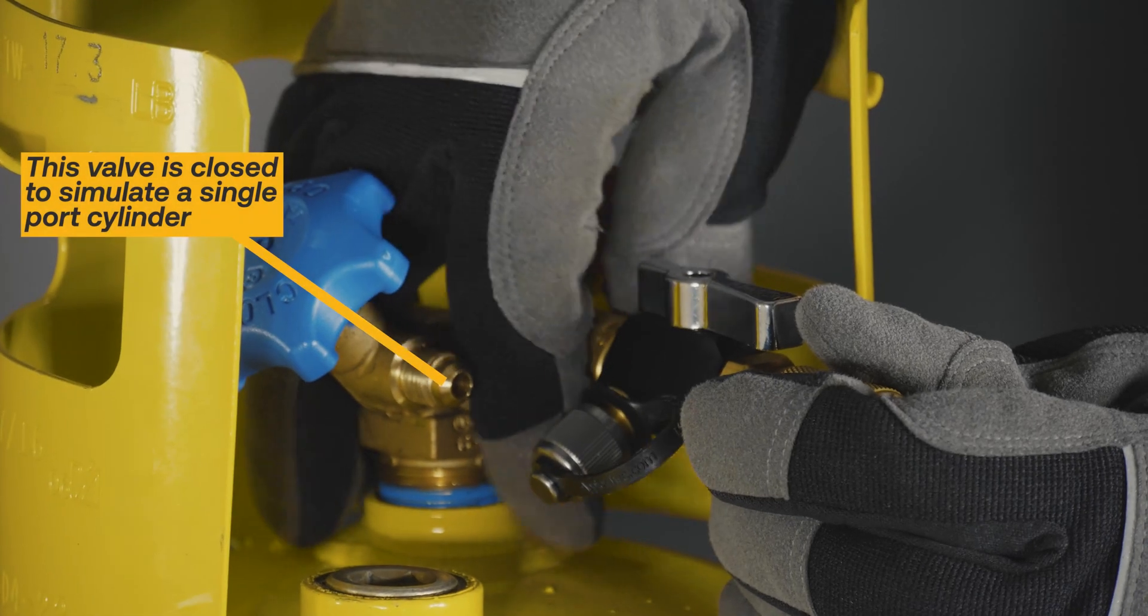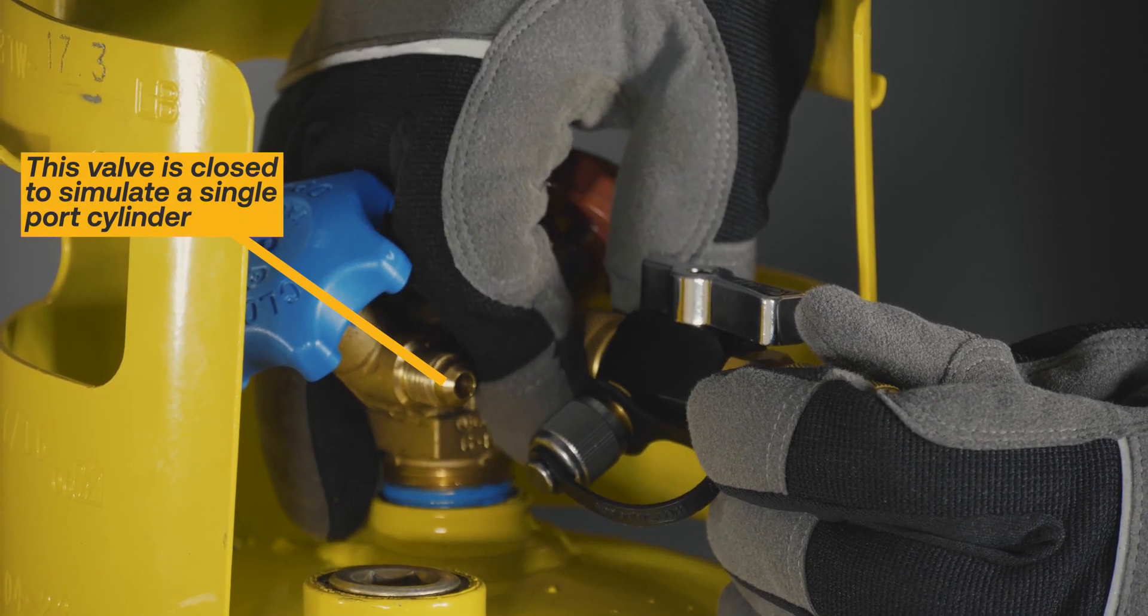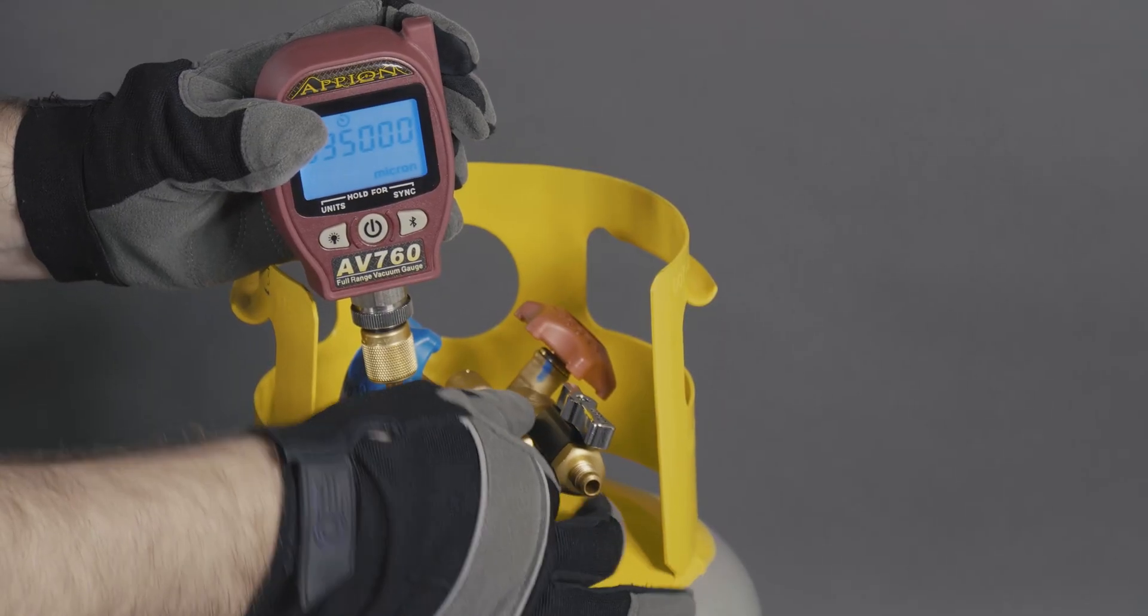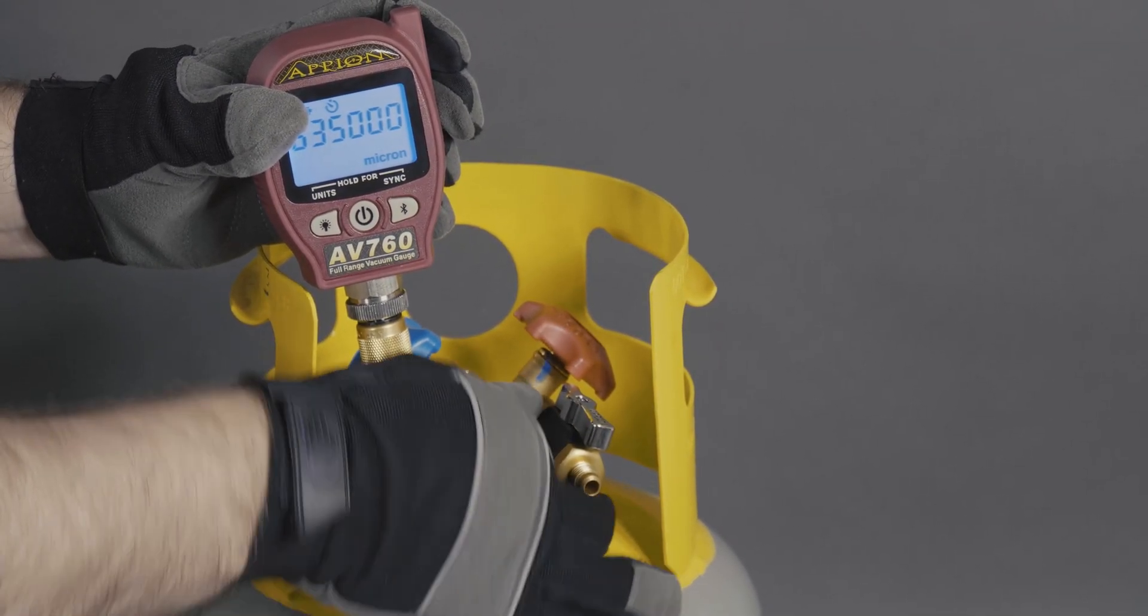For a single-port cylinder, attach a known good valve core removal tool to the port. Attach the test gauge to the side access port of the tool.